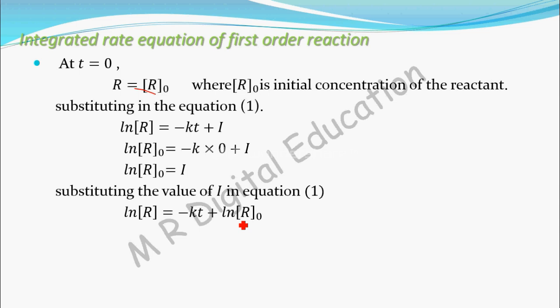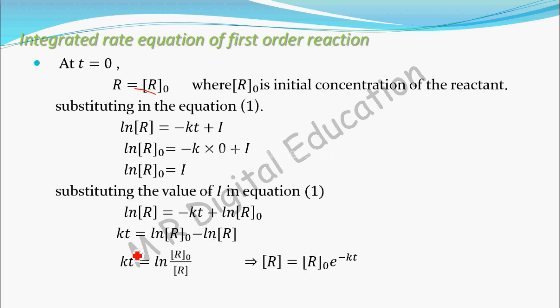Now we have to find the value of k. Take kt to one side and ln R to the other side: kt equals ln R naught minus ln R. Using the logarithm rule — log m minus log n equals log m by n — this becomes kt equals ln R naught by R, which is log R naught minus log R equals log R naught by R.